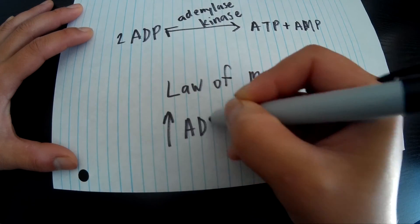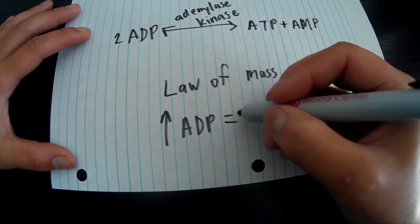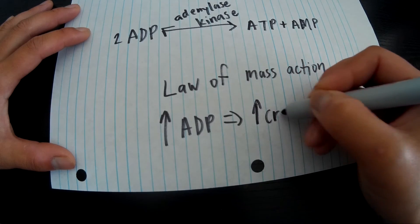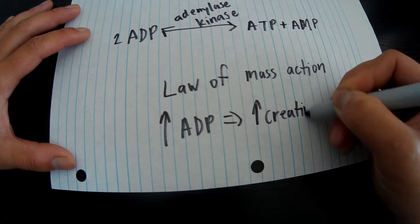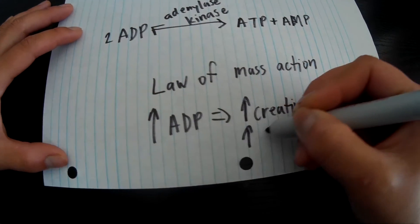Once that slows down and there's more creatine and less ADP in the system, then that starts to move towards the glycolysis.